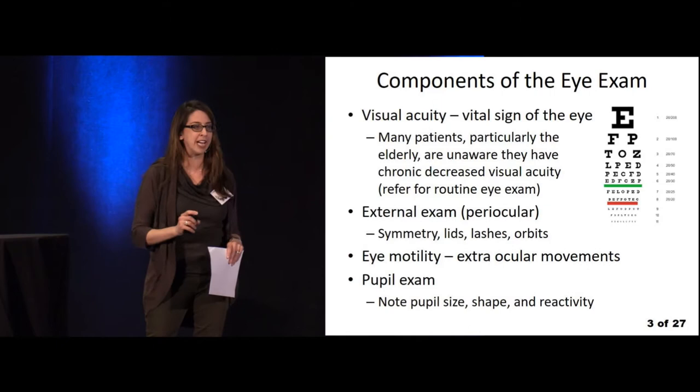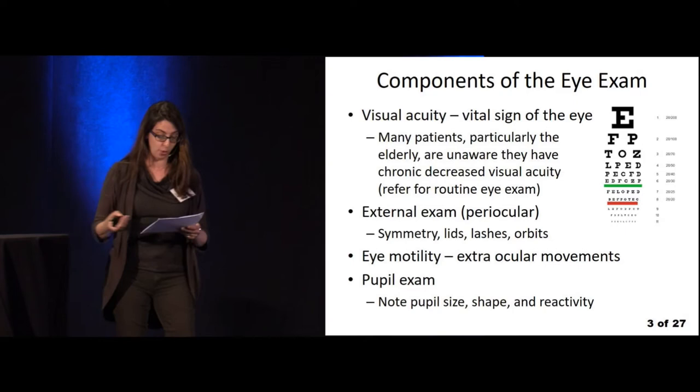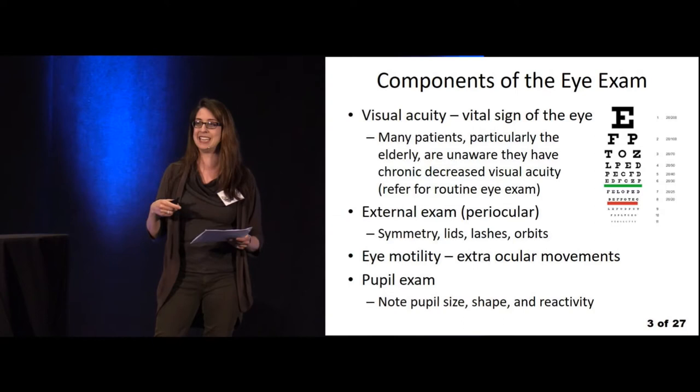If the pupil is irregular and peaked, that may indicate globe rupture — it's important to note that. You can also look for a relative afferent pupillary defect, which may indicate an optic nerve injury, so it's really important to document.